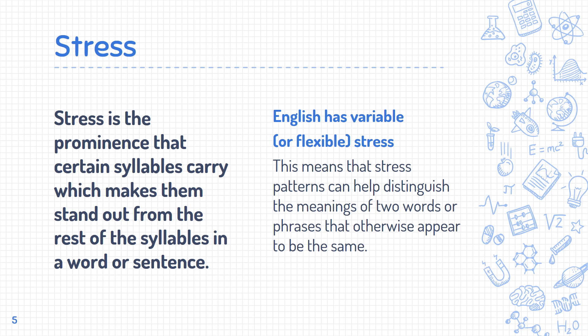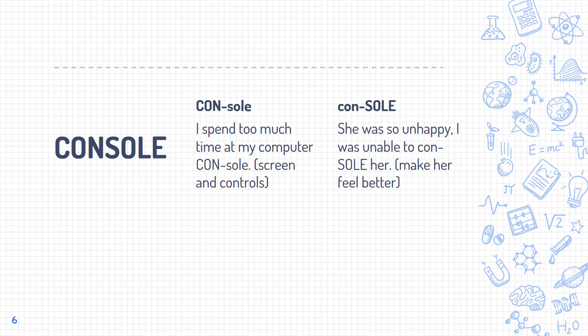The first is stress. Stress is the prominence that certain syllables carry, which makes them stand out from the rest of the syllables in a word or sentence. English has variable or flexible stress, which means that stress patterns can help distinguish the meanings of two words or phrases — otherwise it would be ambiguous. For example, the word 'console': if we say 'CONsole' it means a device, like 'I spend too much time at my computer console.' If we say 'conSOLE' it means to make someone feel better.